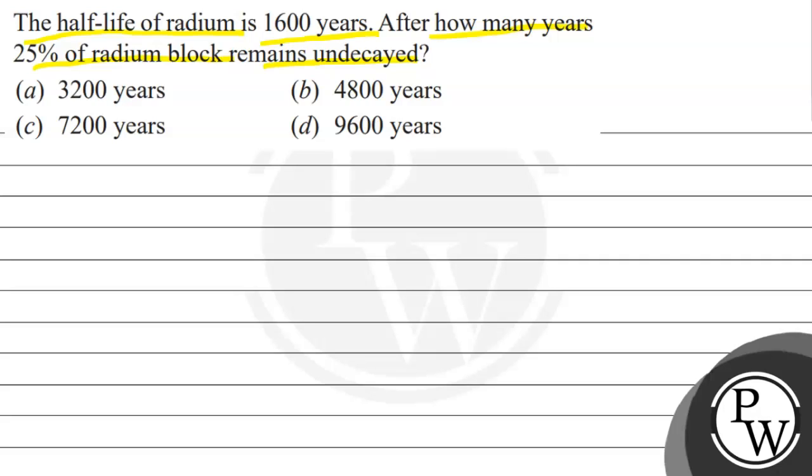We have to choose the correct option. So first of all, let's discuss the key concept. The key concept is the relation between decayed and undecayed amount. That is equal to N equals N₀ times one by two raised to power n. This ratio, meaning, here is the ratio calculate. We will get to the answer.